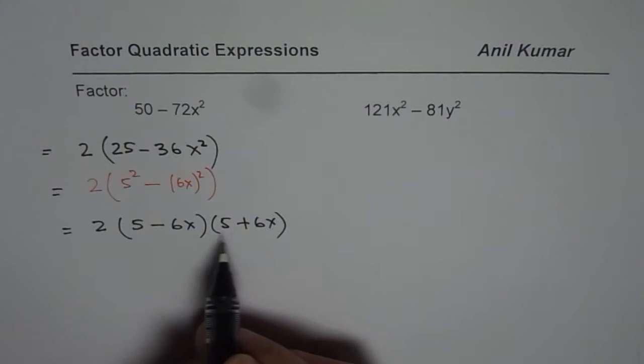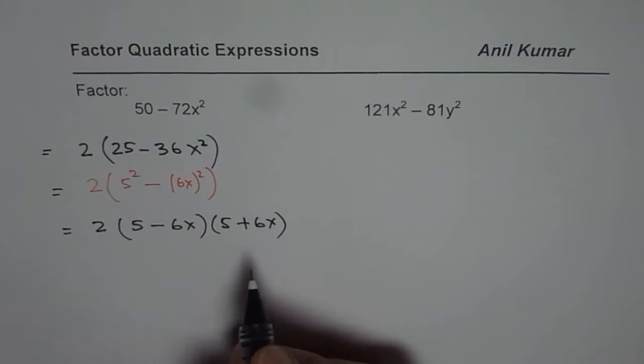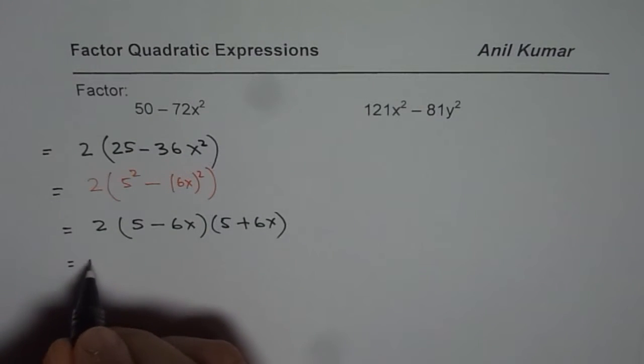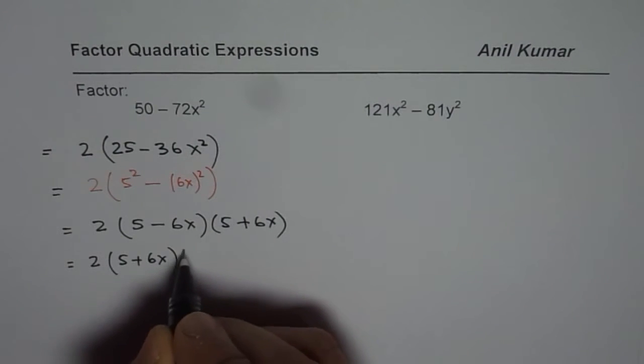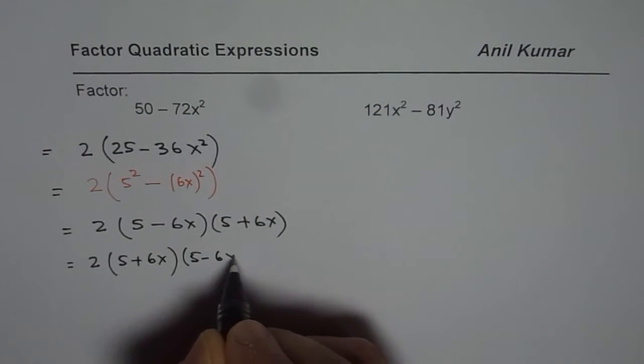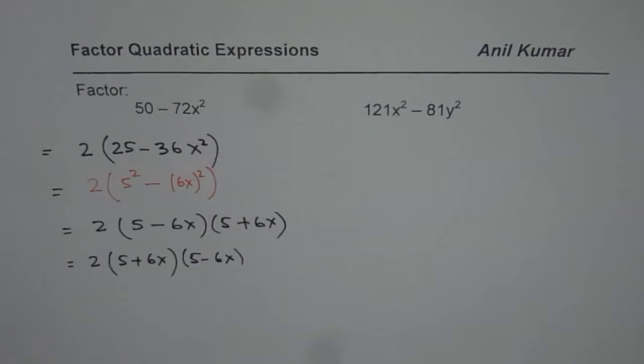Now the answer could be written in either way. Both are correct answers. So even this is correct or if you are writing like 5 plus 6x times 5 minus 6x even then it is correct. So that is fine.